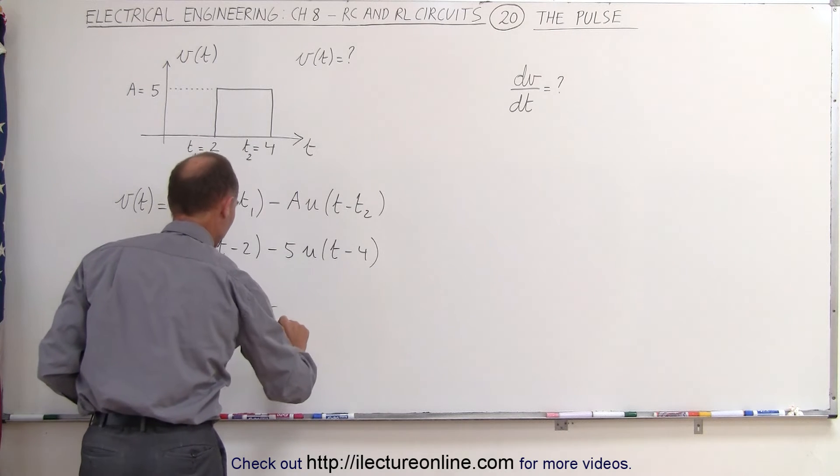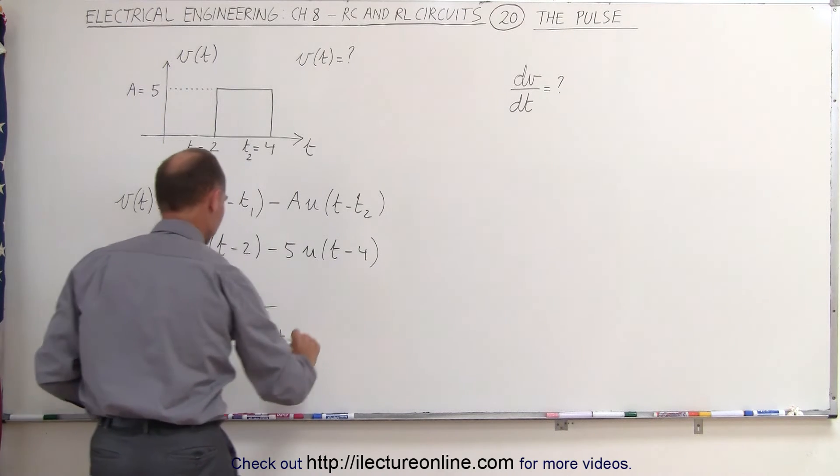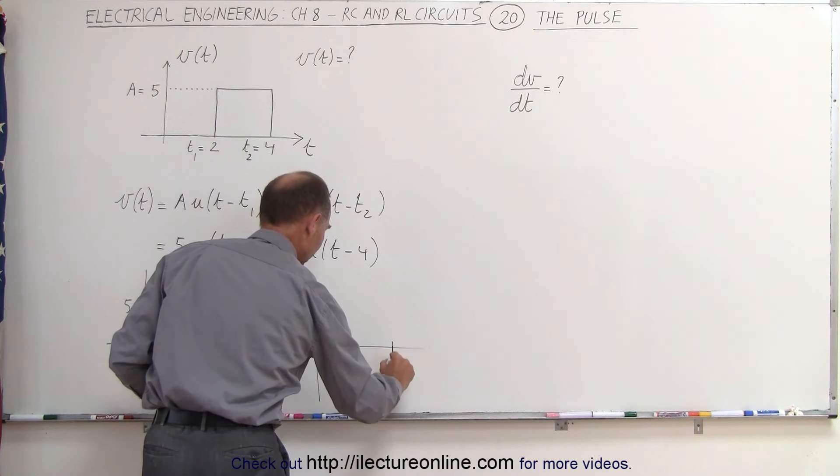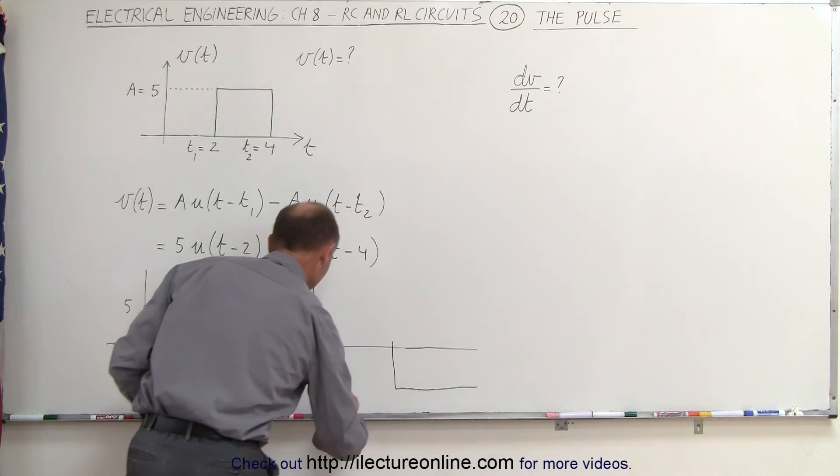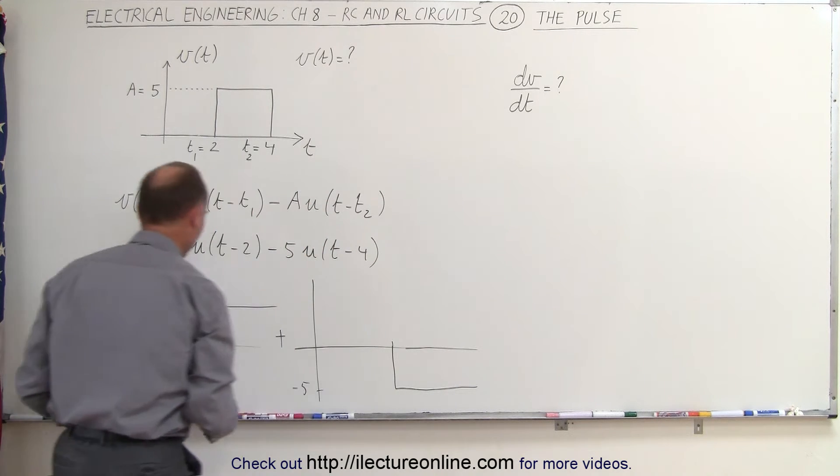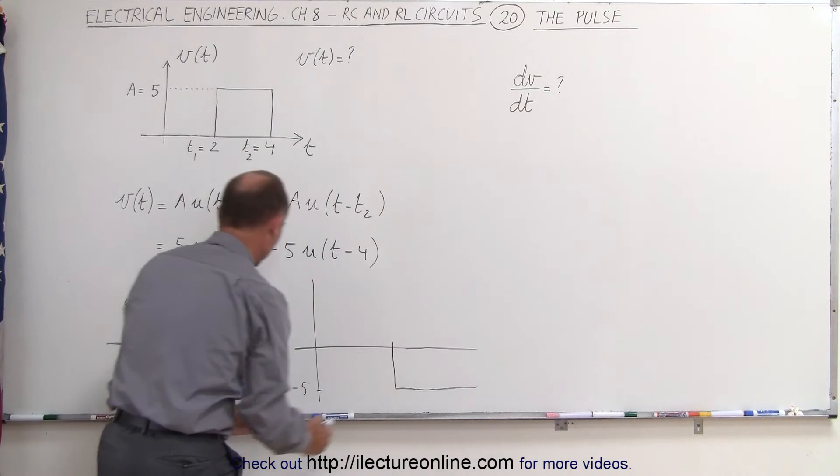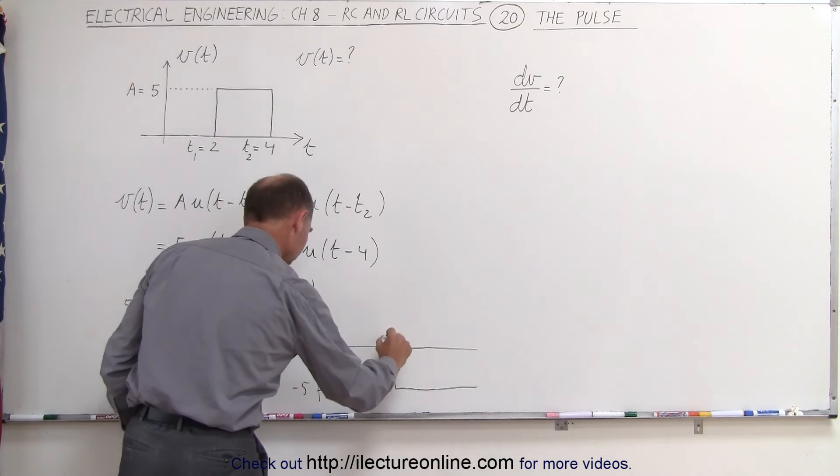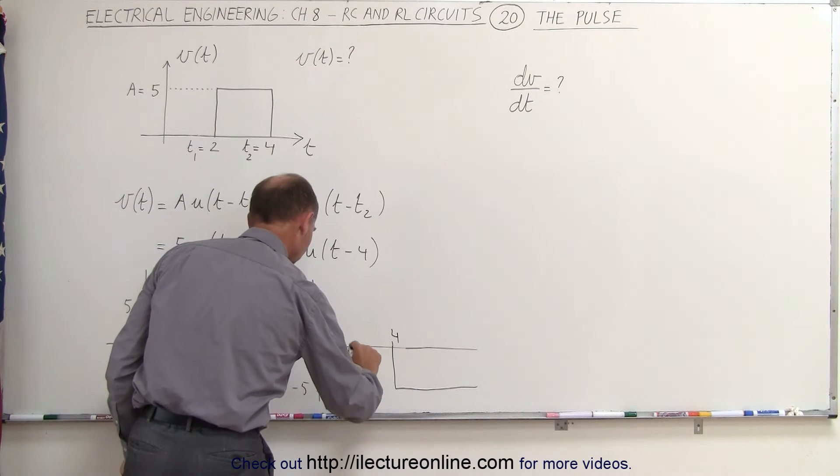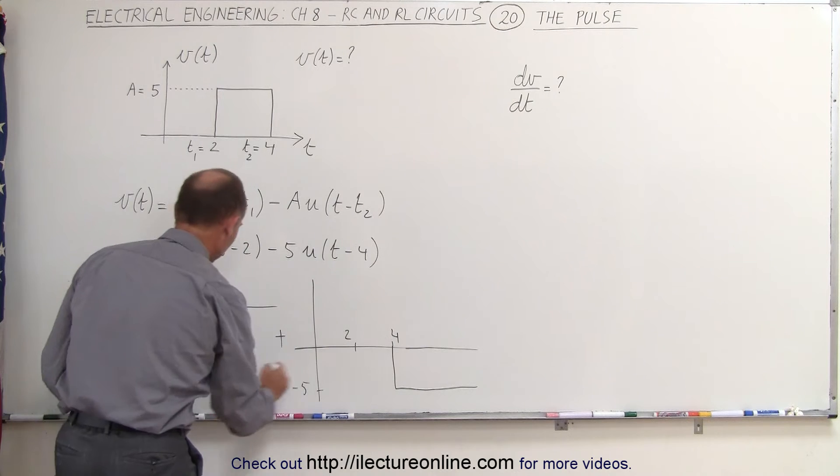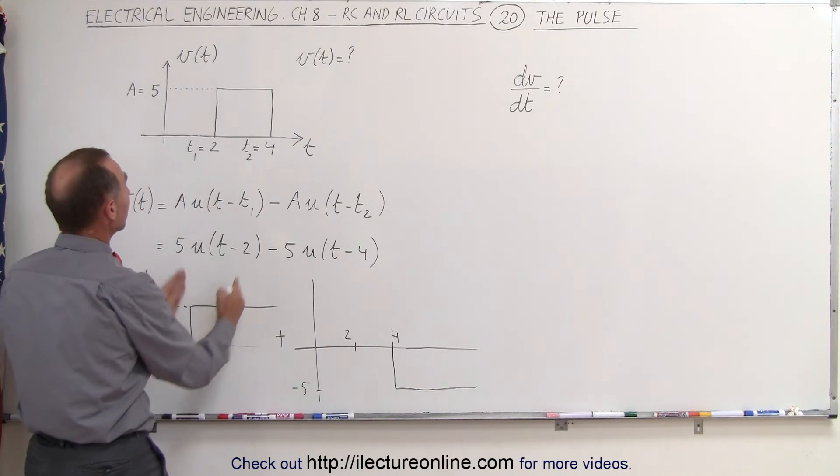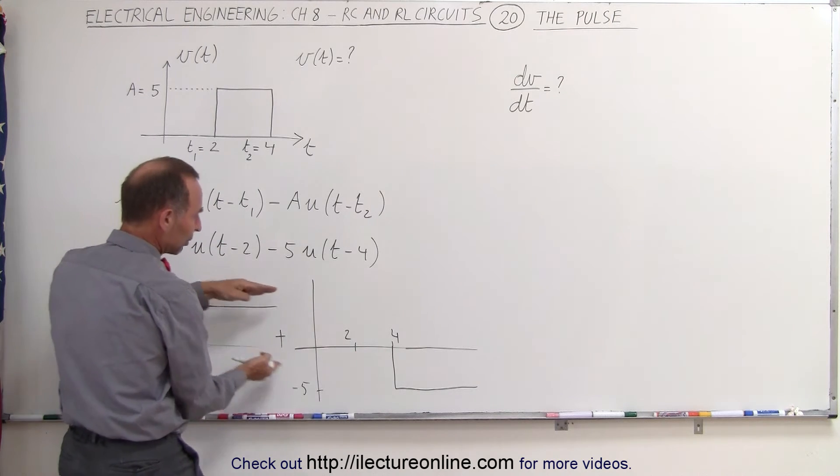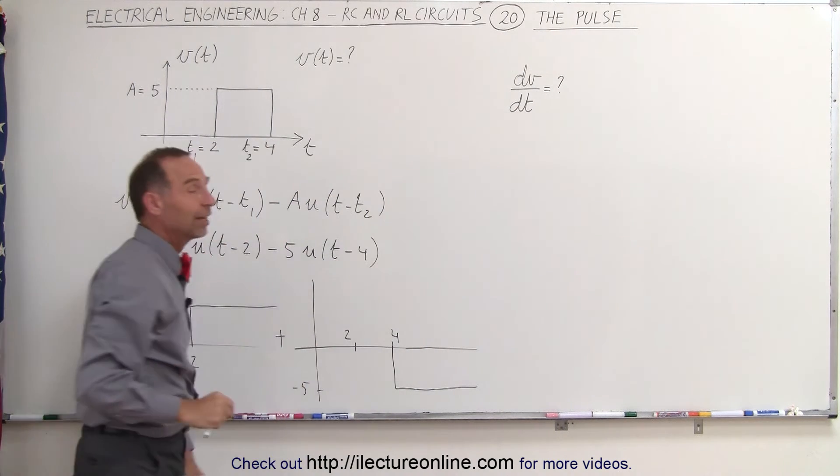If we add to that this part of the function, which would look like this, after four seconds it would be minus five, it would go on forever like this. And so when we add this function together with this function, notice where the two do not overlap. So this would be, let me write that as four, this is at two. So for the two seconds where they don't overlap, you would end up with this piece right here, which is the pulse. After four seconds where they both overlap, the plus five would cancel out the minus five and you end up with zero after that.